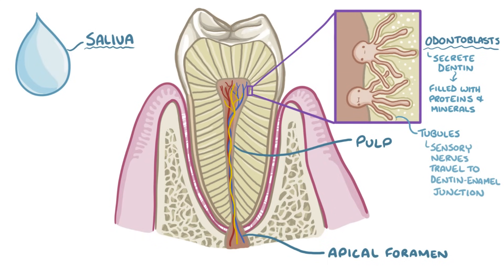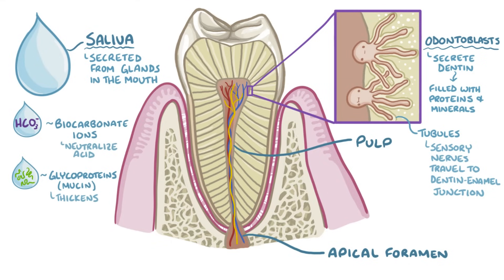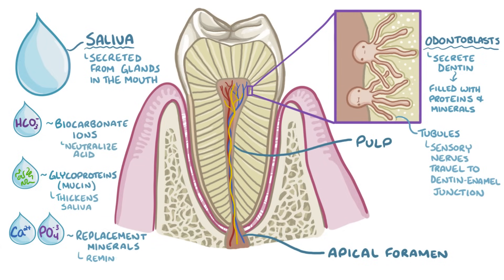Finally, there's saliva, which is secreted from several glands in the mouth. Saliva has bicarbonate ions, which help to neutralize acid in the mouth, as well as glycoproteins like mucin that thickens the saliva. Saliva also has calcium and phosphate, which serve as replacement minerals to help remineralize the tooth surface.